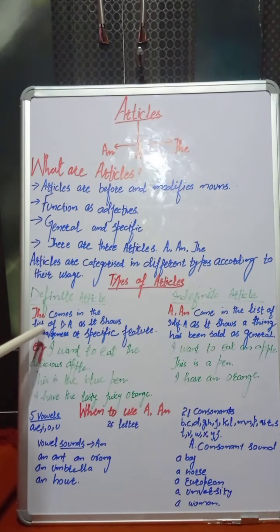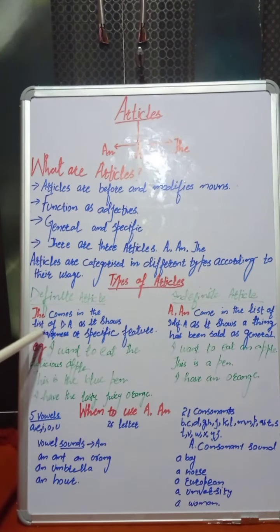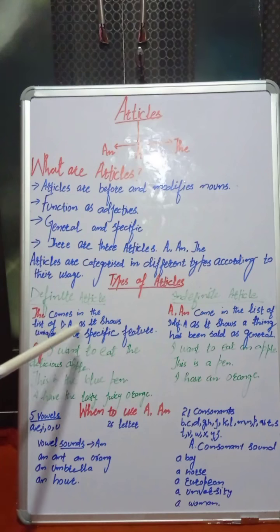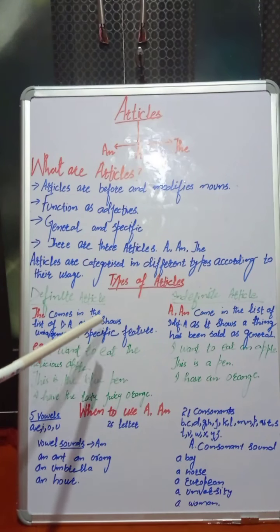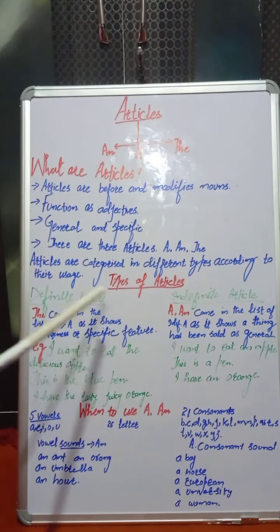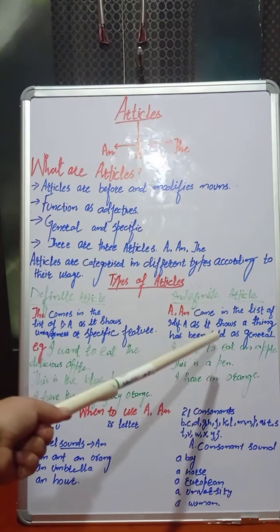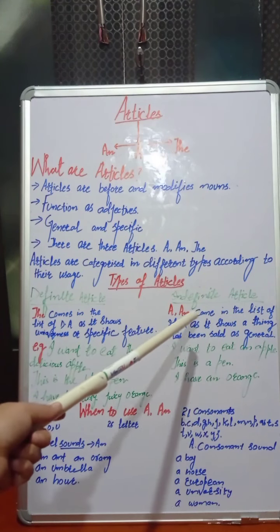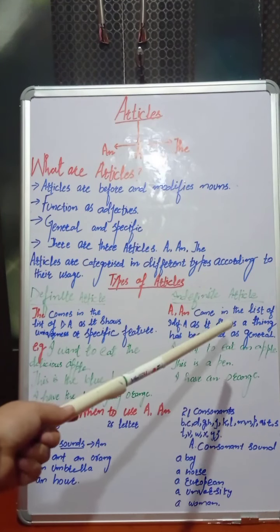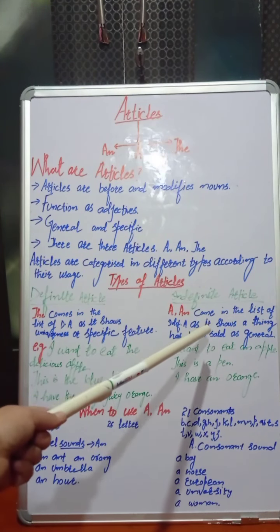'The' has a specific feature — it is used for uniqueness and for a particular thing. But 'A' and 'AN' are used for general things.